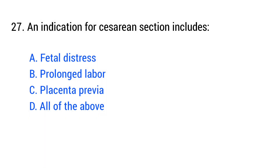Question number twenty-seven. An indication for caesarean section includes? The right answer is option D: All of the above.